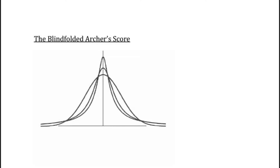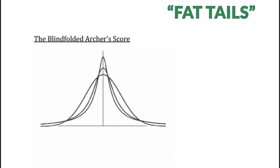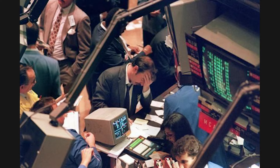One of the key ideas in the book is Mandelbrot's concept of fat tails. This refers to the idea that the distribution of market returns is not normal, as assumed by most economic models, but instead has fat tails that extend further in both directions than a normal distribution. This means that extreme events such as large market crashes are much more common than conventional wisdom would suggest.